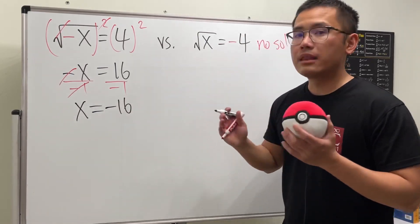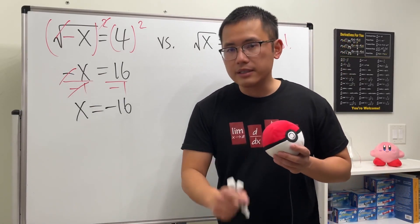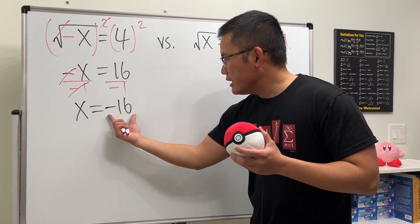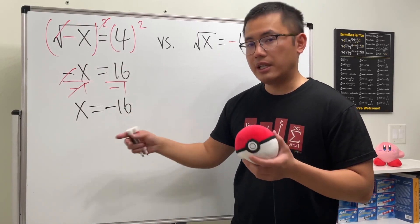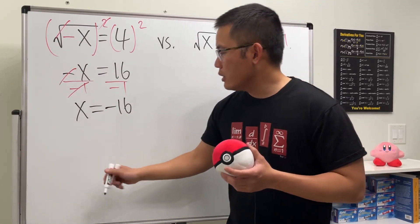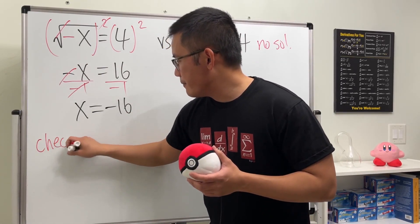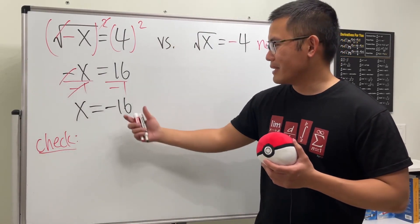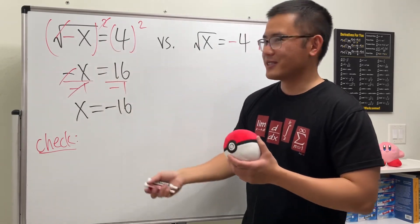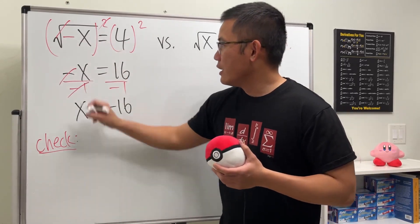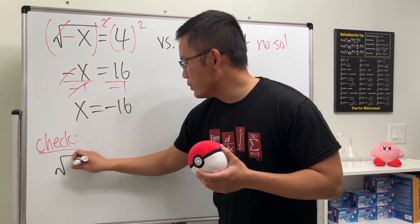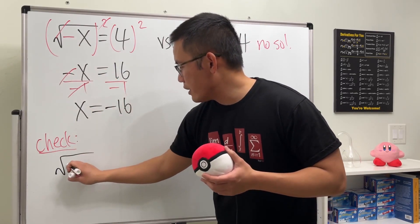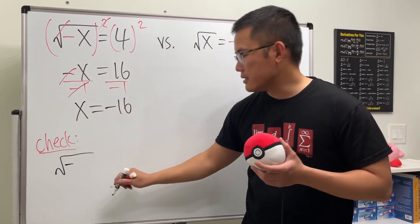Well, we have an answer, but does this work? It does after we plug in negative 16 here. We can check it and you see that it does work. So here's the check, not like the check that you get from the restaurant, but the check is we're just going to plug in. Originally we have the square root and then this negative here, but the x we found it to be negative 16, so let me write that down.